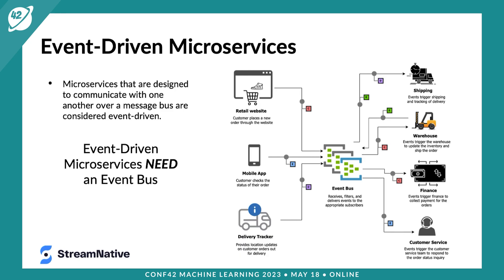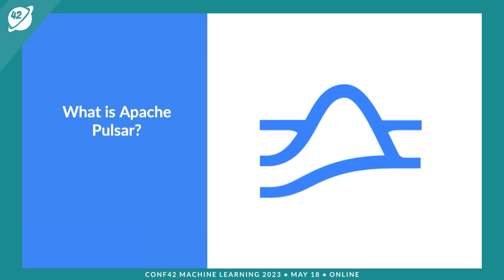In short, event-driven microservices need an event bus to interact with one another. That's the critical component all event-driven microservices share in common, regardless of what programming languages they're written in, such as Java or Python. That allows them to be written in any language of your choice and communicate with one another seamlessly. So let's pivot and talk about Apache Pulsar and why it is a good fit for event-driven microservices.